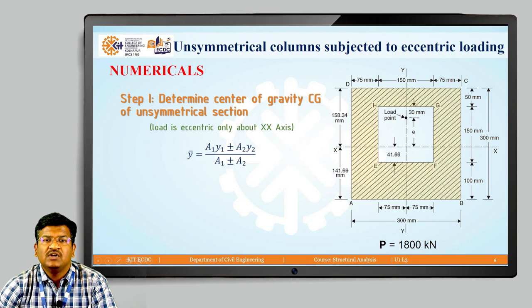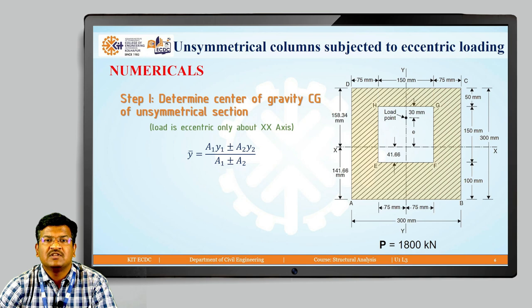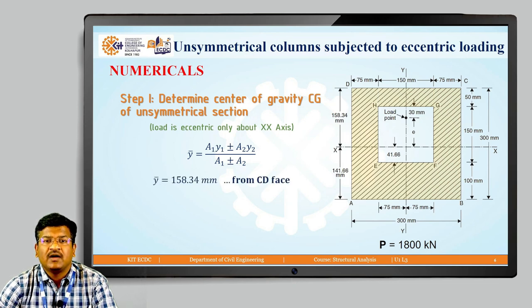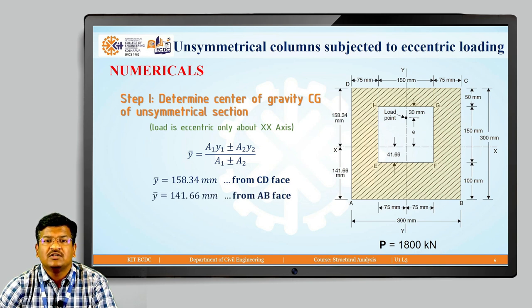First step: determine the CG. Since the figure is symmetrical about y-y axis and unsymmetrical about x-x axis, we find y-bar. y-bar = (A1·y1 − A2·y2) / (A1 − A2) = 158.34 mm from face CD (top). From the bottom (face AB), y-bar = 141.66 mm.